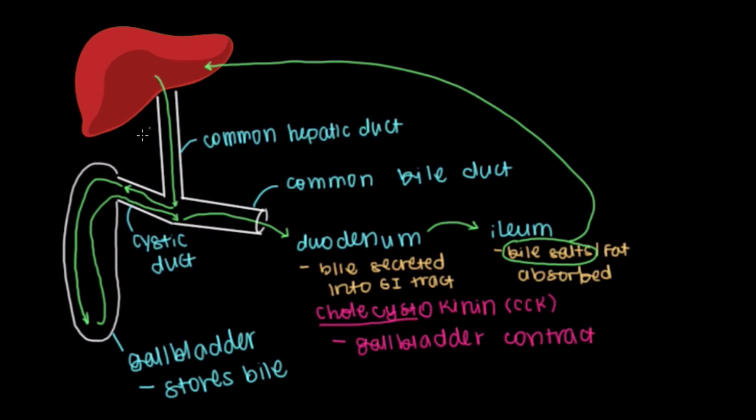If we were to review all the different pit stops that our bile takes in this process: Number one, bile is made in the liver. Once it's made, number two, it goes through the common hepatic duct, and then flows to the cystic duct to be stored in the gallbladder until we receive cholecystokinin as a signal to tell the gallbladder to contract. From there, bile is squeezed out of the gallbladder, re-enters the cystic duct, and goes into the common bile duct.